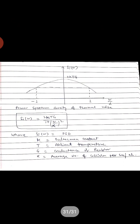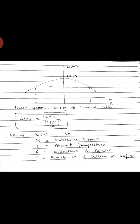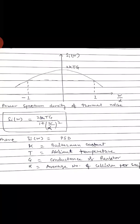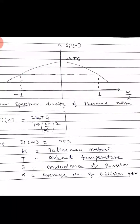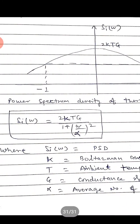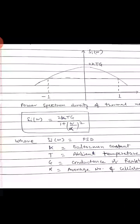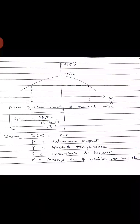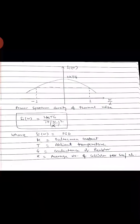The power spectral density S_i(ω) shows how power varies with frequency for thermal noise. Its value is approximately 2kTG, and the full equation is: S_i(ω) = 2kTG / [1 + (ω/α)²], where K is the Boltzmann constant, T is the ambient temperature, G is the conductance of the resistor, and α is the average number of collisions per second.